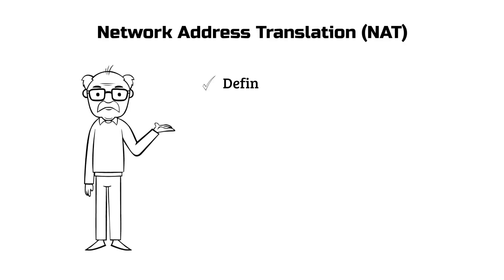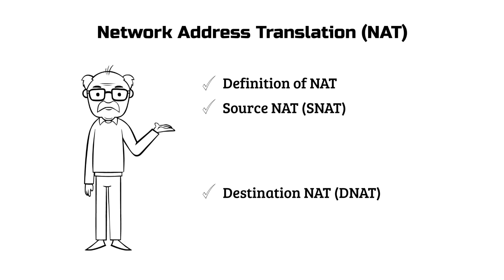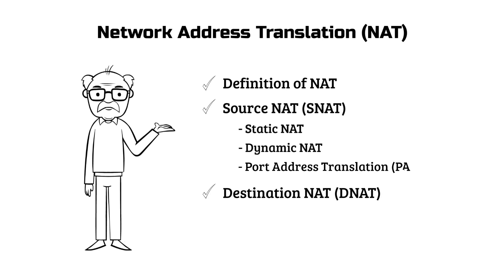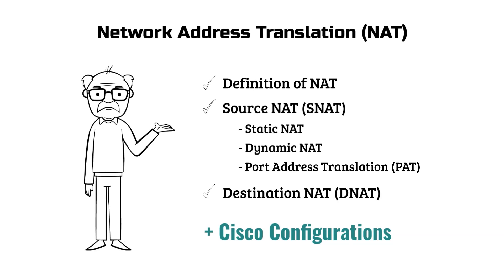In this tutorial, we'll dive into Network Address Translation, or NAT, and its two main categories, Source NAT and Destination NAT. We'll cover the various forms of Source NAT, including Static NAT, Dynamic NAT, and Port Address Translation. Throughout the tutorial, we'll also learn how to configure and apply these NAT types in real-world scenarios.